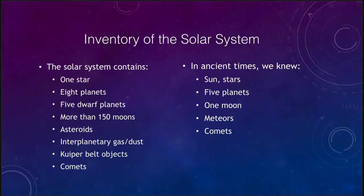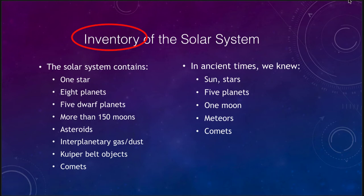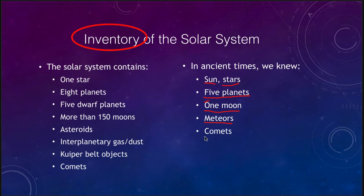If we want to take a quick inventory of our solar system, we can look at this two different ways: what we know now and what we knew in ancient times. In ancient times we looked at our solar system as the universe. We saw the Sun and the sphere of the stars. There were five planets known — Uranus and Neptune had not yet been discovered, and the Earth would not have been considered a planet. There was only one moon known, and we knew of meteors and comets.